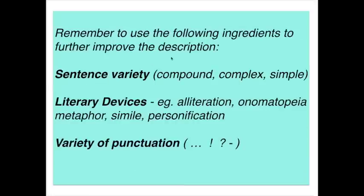Remember to use the following ingredients to further improve your description: sentence variety — compound, complex and simple sentences. Use a range of literary devices such as alliteration, onomatopoeia, metaphor, simile, and personification. Also use a variety of punctuation — don't just rely on the full stop and the comma. Look at exclamation marks, question marks, dashes, or ellipses.